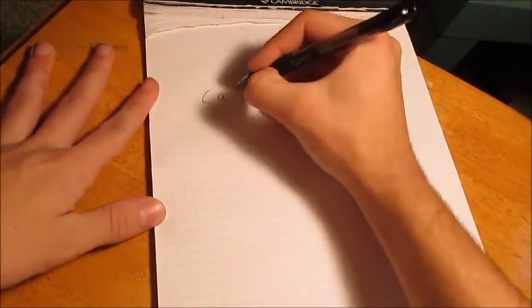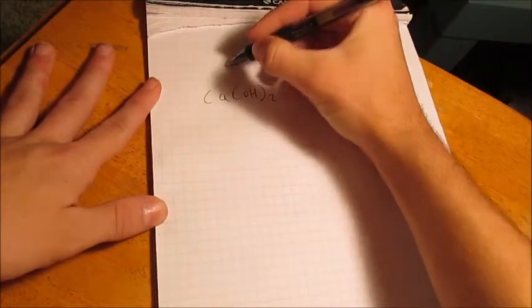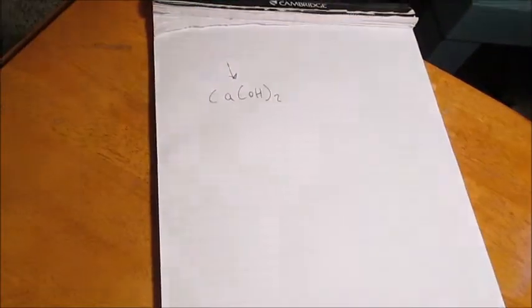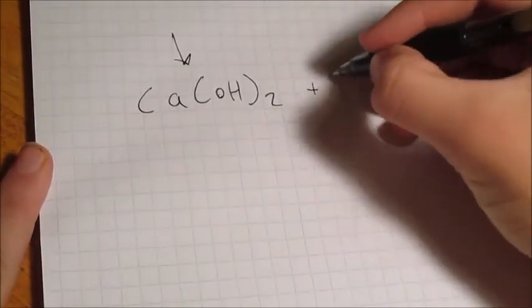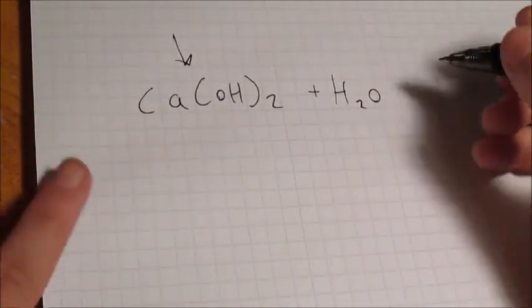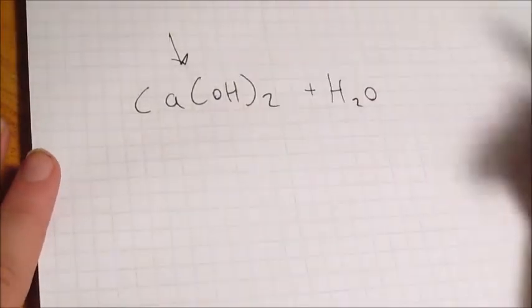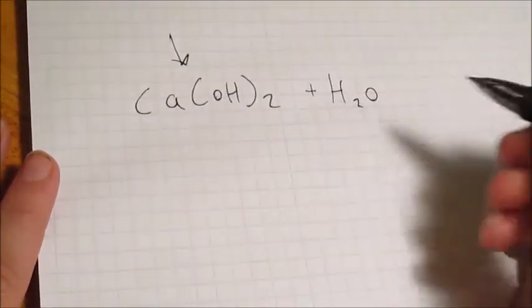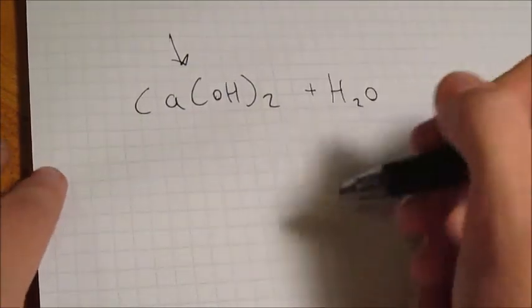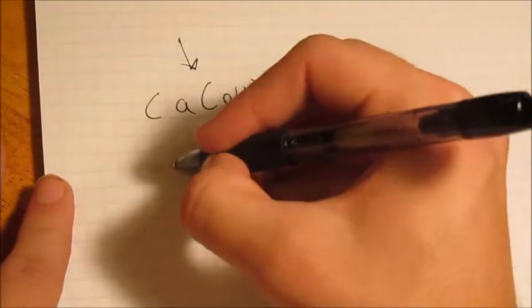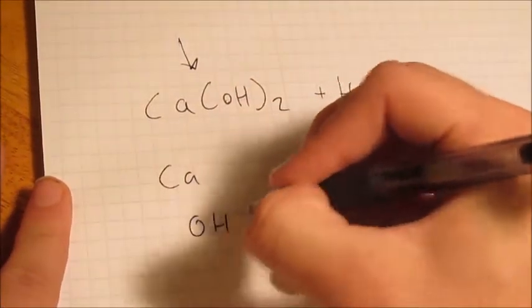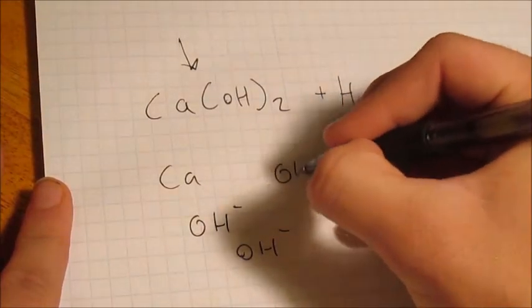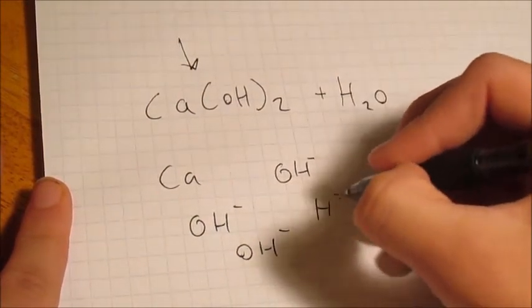The general idea is this: you have calcium hydroxide — a calcium with two hydroxide groups — and when you add it into water, H₂O, it'll separate because it's a polyatomic ion. Calcium is positive and the hydroxides are negative, and the water molecule will break it up, forming a slurry of calcium, three separate hydroxide groups, and one lonely hydrogen floating around somewhere out there.